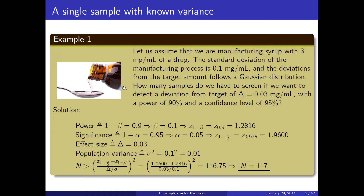That means we will need to take 117 samples of this syrup, determine the mean concentration of all those samples, and then run a test to check whether this mean is significantly different from the target.